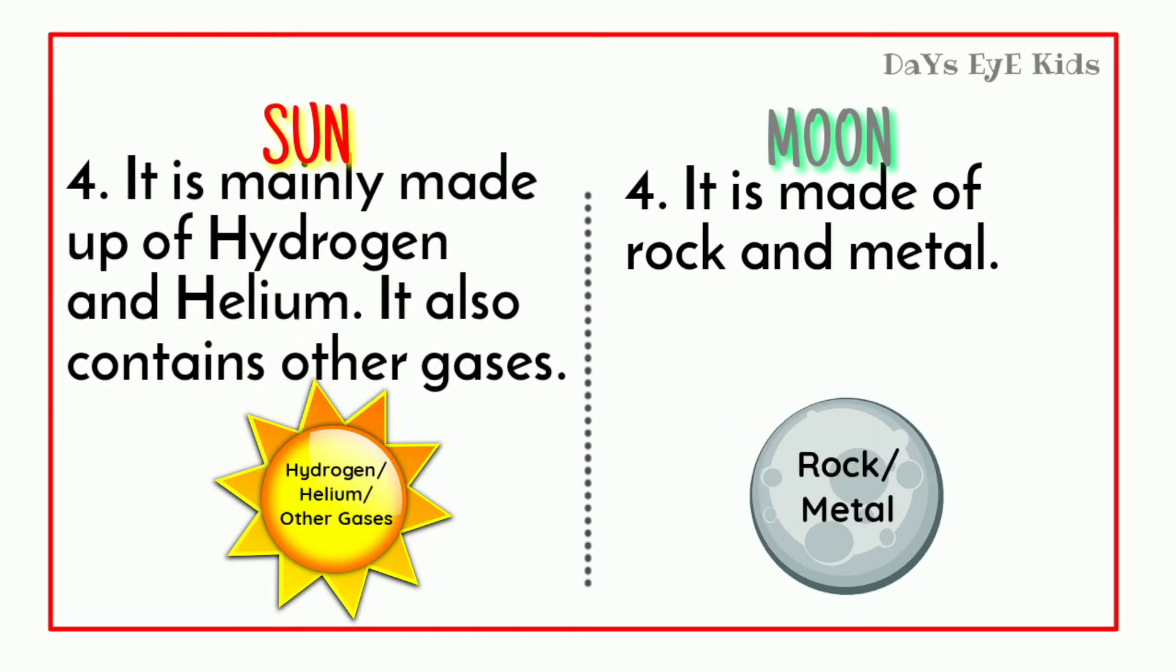The Sun is mainly made up of hydrogen and helium. It also contains other gases. The Moon is made up of rock and metal.